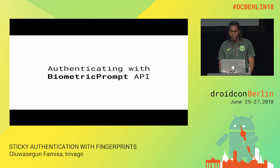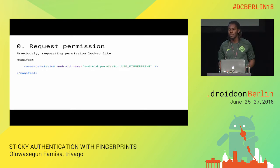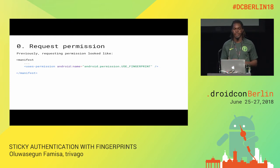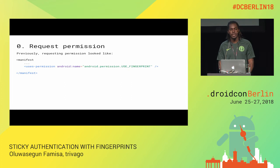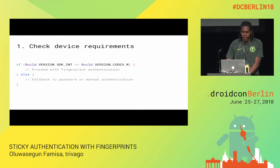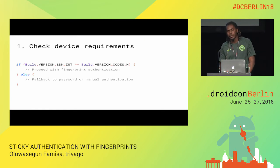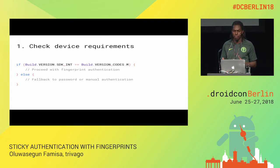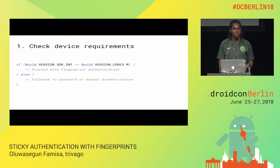Authenticating with the Biometric Prompt API: typically the first step is to request the permission. This is what it looks like to implement normal fingerprint authentication today. But this permission is deprecated as of Android P, and now you have to use the biometric permission. The next step would be to check the device requirements — you want to check if the device is Android M and above, then proceed with fingerprint authentication, or fall back to your manual password or whatever form of authentication you have as an alternative.